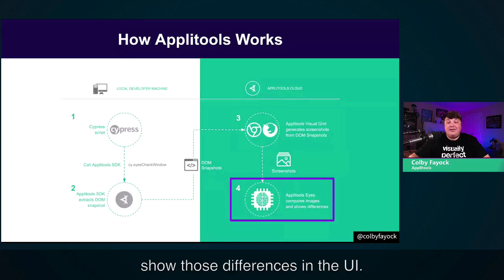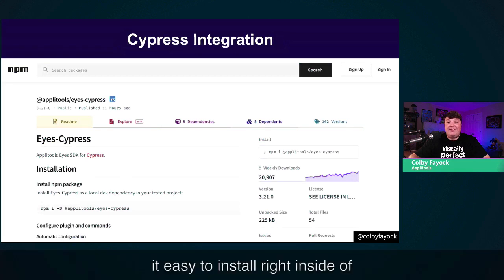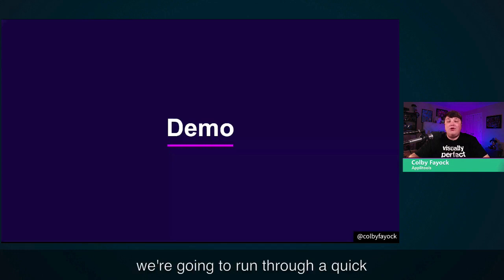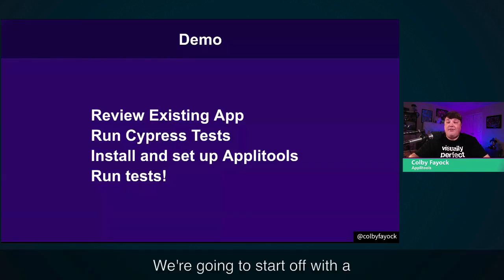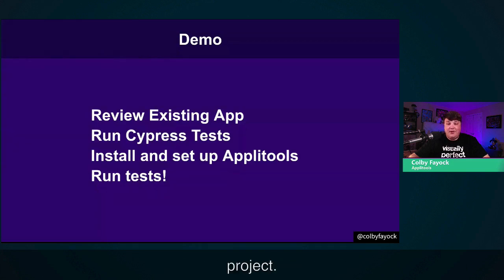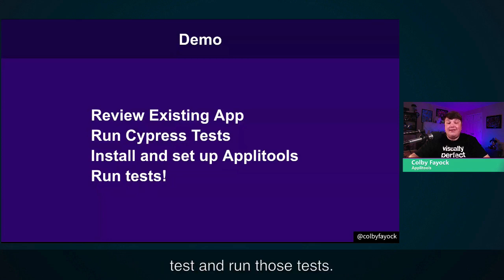It will then show those differences in the UI. You can use the Applitools Eyes Cypress SDK — an NPM package that makes it easy to install right inside of your Node project. To see how all that works, we're going to run through a quick demo of adding Applitools to some existing Cypress tests. We'll start with a simple existing project, review it, run the Cypress tests and check out what's going on, and then add Applitools visual tests and run those.